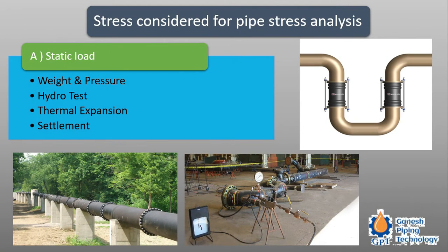For pipe stress analysis, the static loads considered are: weight of the pipe, hydrotest, thermal expansion, and settlement. We can see how the pipe movement is affected because of thermal expansion, and also due to hydrotest.